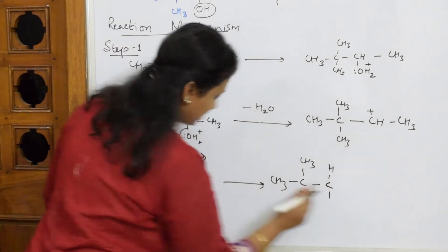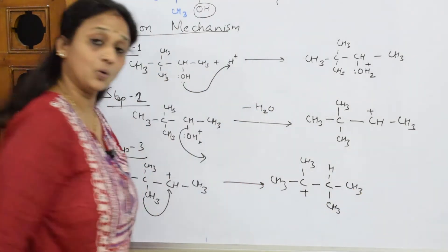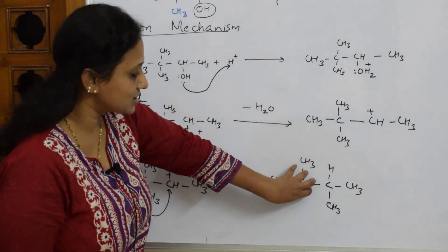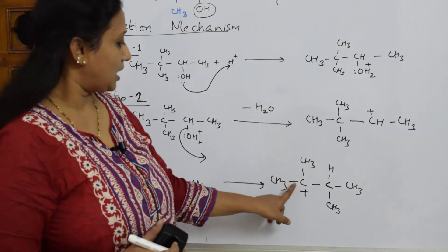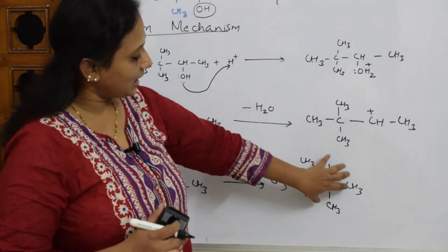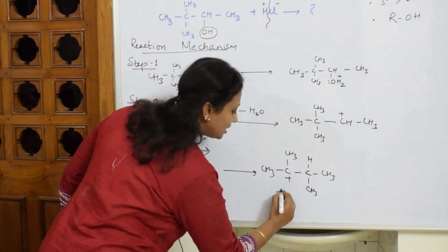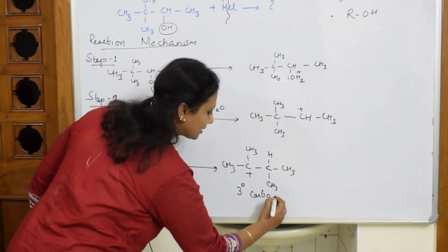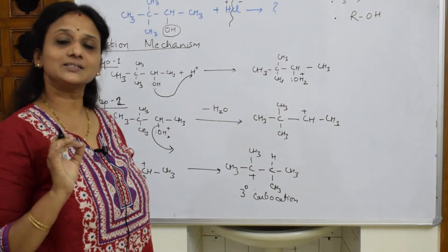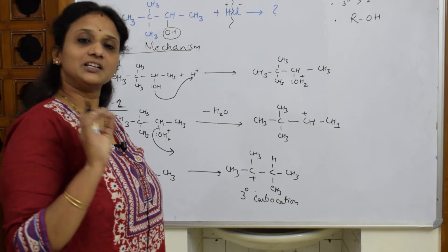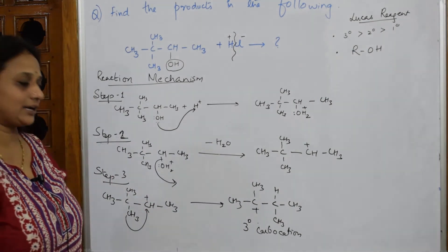After the methyl shift, the new carbocation is: CH₃–C⁺(CH₃)–CH(CH₃)–CH₃. Concentrate on this carbon — it has no hydrogen, only methyl/alkyl groups attached — so it is a tertiary carbocation. Remember: the tertiary carbocation is the most stable one. That is the reason in the Lucas test, tertiary reacts faster than secondary, faster than primary.